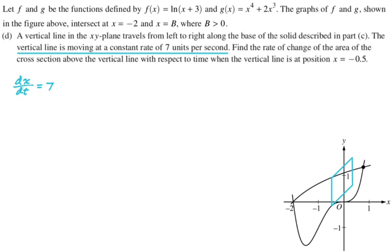Like if you drew that segment on your paper, that square that I just drew or tried to draw would be perpendicular to your paper. So it'd just be coming out of your desk or whatever. So we're trying to find the rate of change of the area of that cross section above the vertical line with respect to time when the vertical line is at x equals negative 0.5.